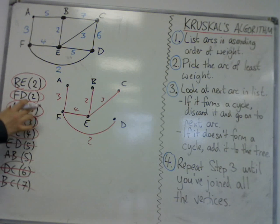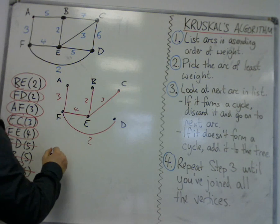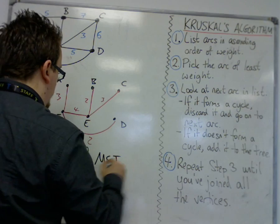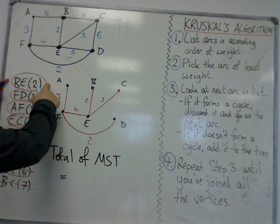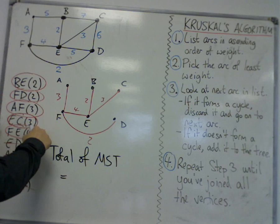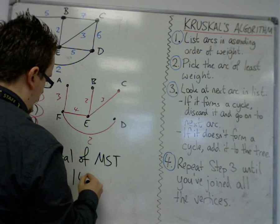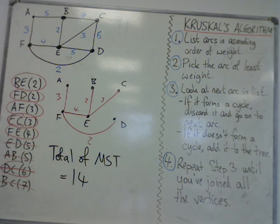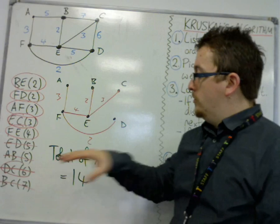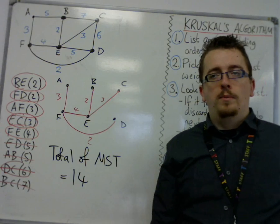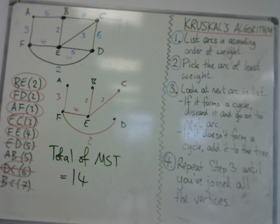So once all the vertices are connected, you can just disregard all of the remaining edges. So we have a total of the minimum spanning tree is 2, plus 2, plus 3, plus 3, plus 4. So 4, 7, 10, 14. Okay, so that's our minimum spanning tree total. And that would solve the problem. So... thank you.